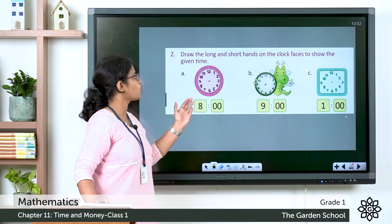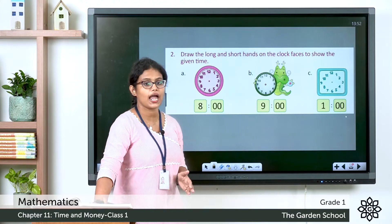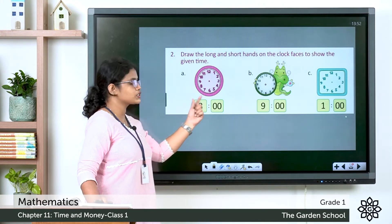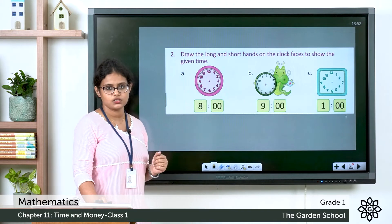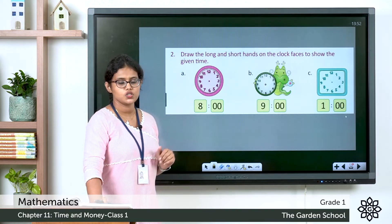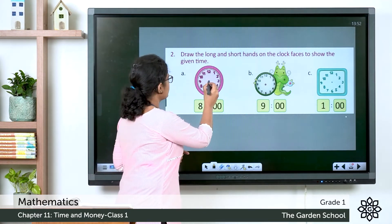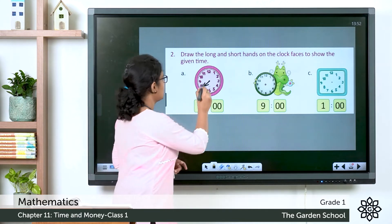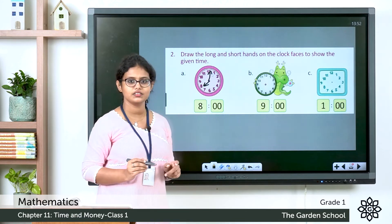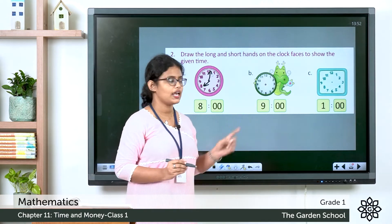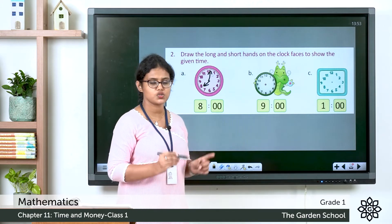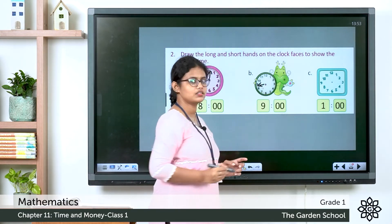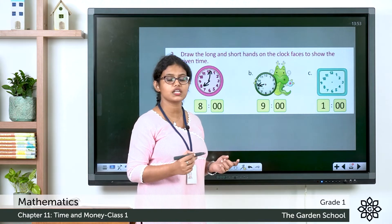Now you need to draw the hands on the clocks for the time shown. The time given is 8 o'clock. The hour hand, which is the small hand, points to 8, and the minute hand, the long hand, points exactly at 12. For the second clock, you need to represent 9 o'clock — the hour hand, the small hand, points to 9, and the minute hand, the long hand, points exactly at 12.